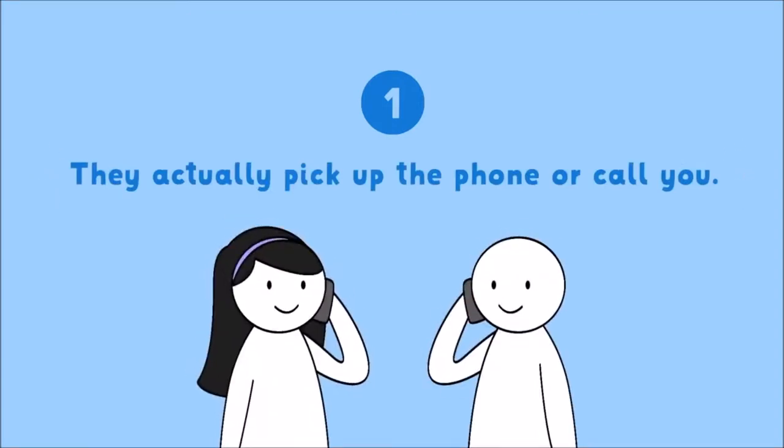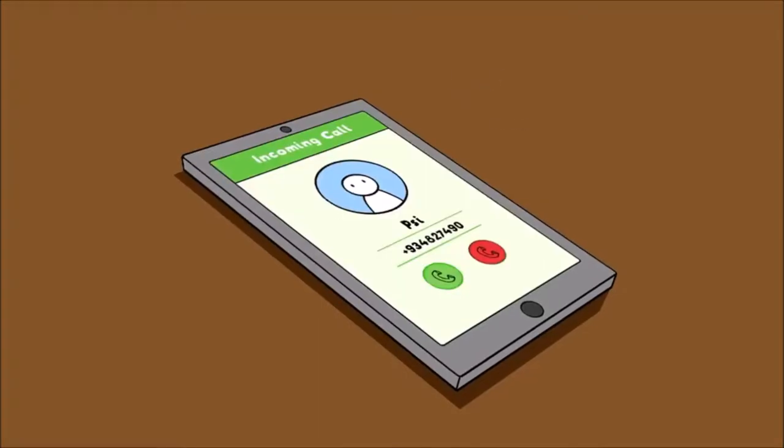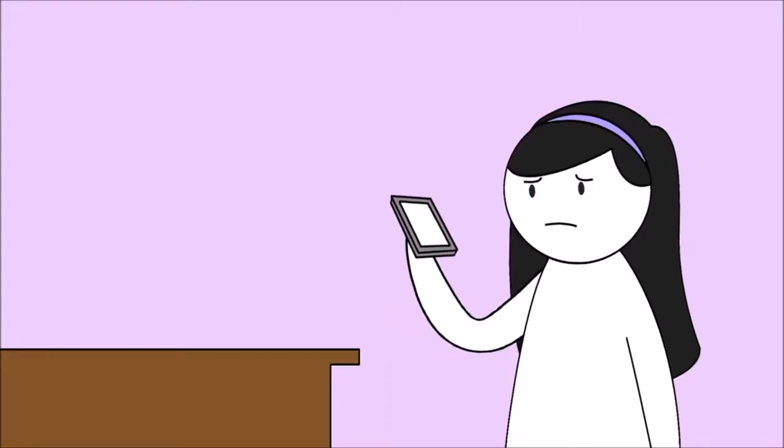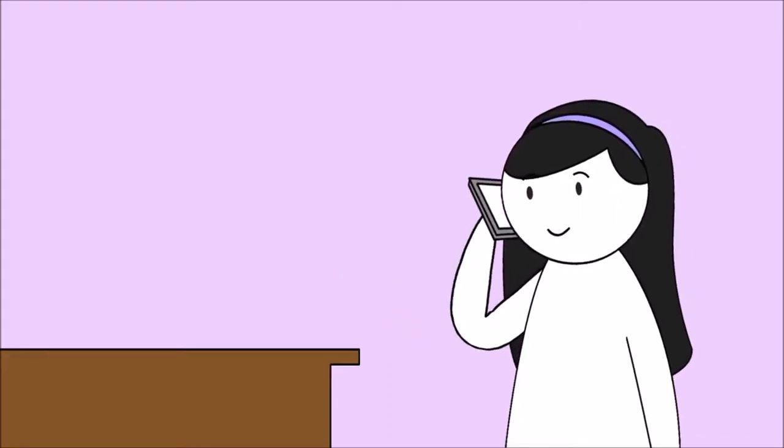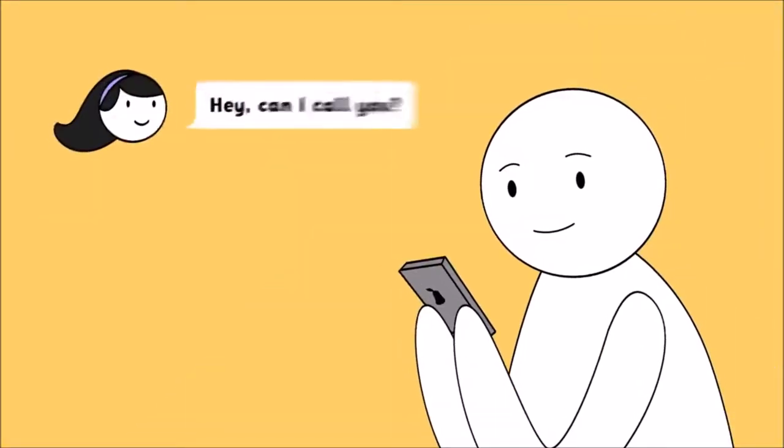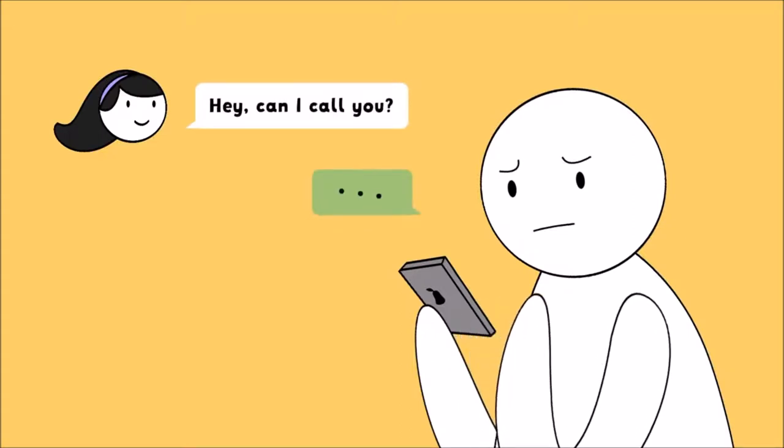1. They actually pick up the phone or call you. This is especially true for restrained introverts. This type of introvert is reserved and slowly opens up to others. If this sounds like your crush, slow and steady wins their heart. Preferring to think before they speak, texts are more of their speed and they often avoid phone calls. But if they make an exception for you, that's incredibly special.